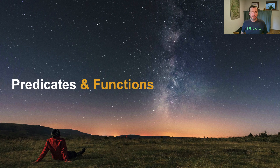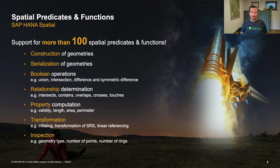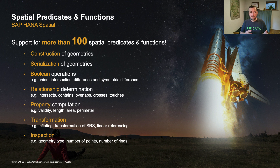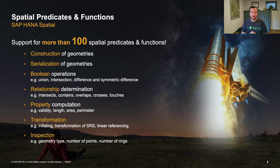Let's dive into the details of the predicates and functions we are offering. They can be roughly divided into the following categories: functions for construction and serialization of geometries — the input and output mentioned before; functions for Boolean operations, like union or intersection between geometries; functions for relationship determination, for example to ask if one geometry intersects another; functions for property computation such as the area of a polygon; for transformation, such as converting between spatial reference systems or inflating a polygon; and functions for inspecting geometries, for example to ask how many points a polygon consists of.